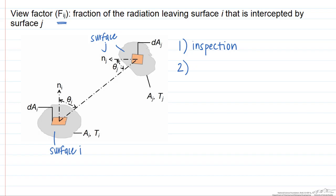The second is to use relationships developed for view factors. One of them is that A sub i times F sub ij equals A sub j times F sub ji. This is known as the reciprocity relationship.